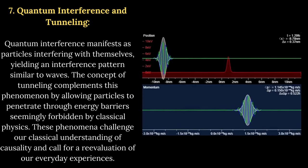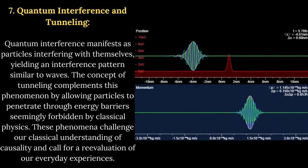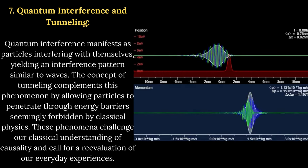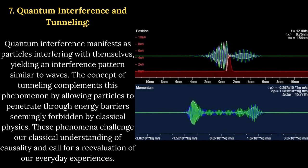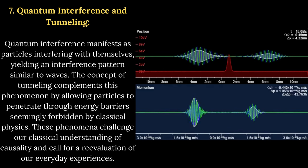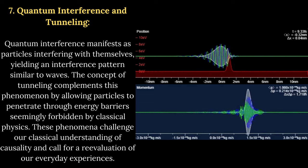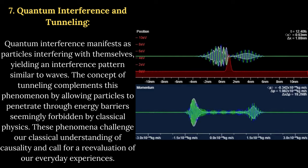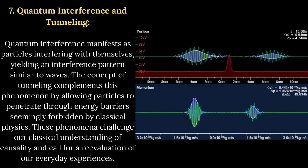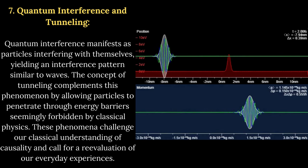Quantum interference and tunneling. Quantum interference manifests as particles interfering with themselves, yielding an interference pattern similar to waves. The concept of tunneling complements this phenomenon by allowing particles to penetrate through energy barriers seemingly forbidden by classical physics. These phenomena challenge our classical understanding of causality and call for a re-evaluation of our everyday experiences.